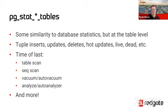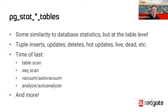Next we have the tables views. Most of the time you'll use the user view — pgstat_user_tables — which gives you just the tables you've created. Those are the tables satisfying the queries your applications and reports need. There's a lot of similarity here. Tuples — or tuples — are essentially rows. At the table level, this is where you can start to identify tables that are inefficient in some way.